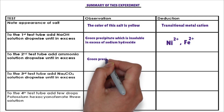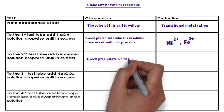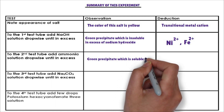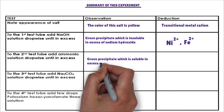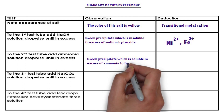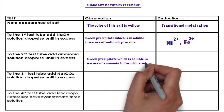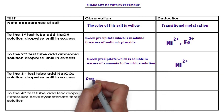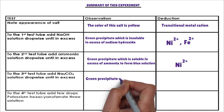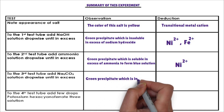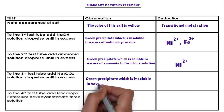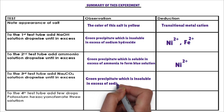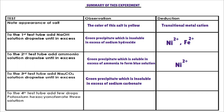To the second test tube, ammonia solution is added dropwise. The cation that forms a green precipitate with ammonia solution, and whose precipitate turns into a blue solution in excess of ammonia solution, is nickel-2-ion. To the third test tube, sodium carbonate solution is added dropwise. The cations that form a green precipitate with sodium carbonate solution, insoluble in excess, are nickel-2-ion and iron-2-ion.